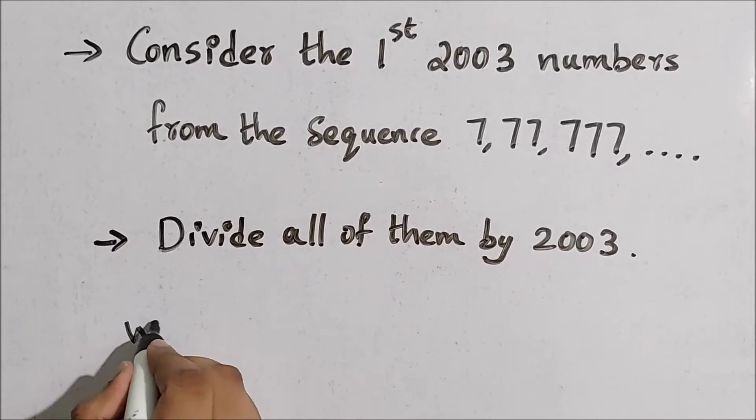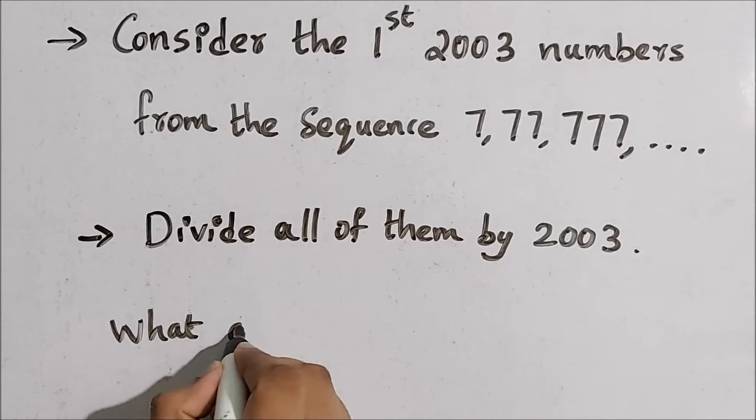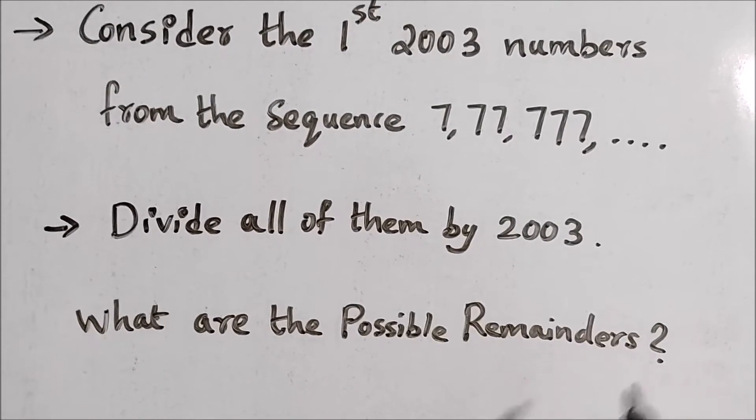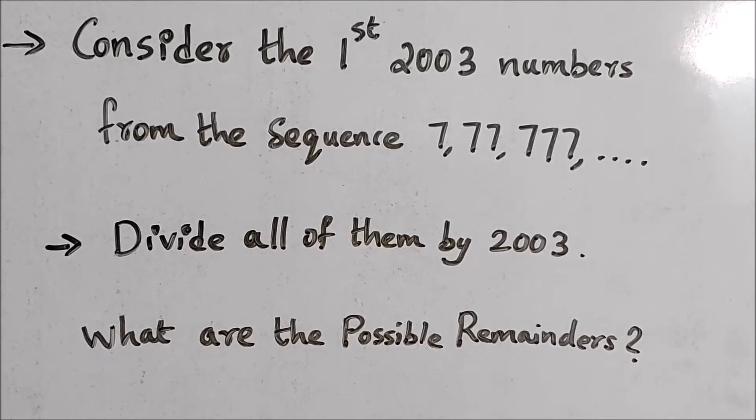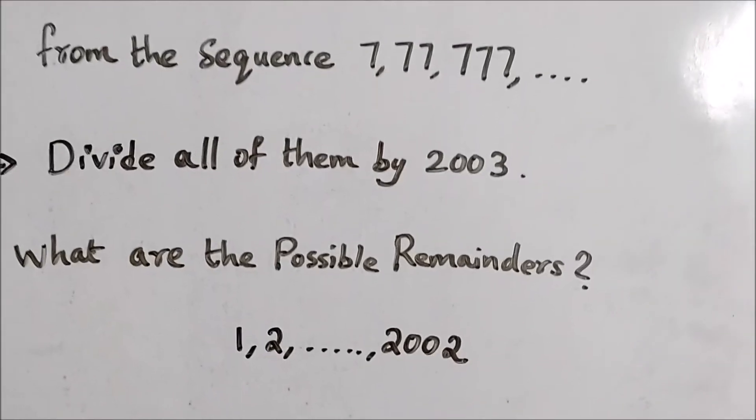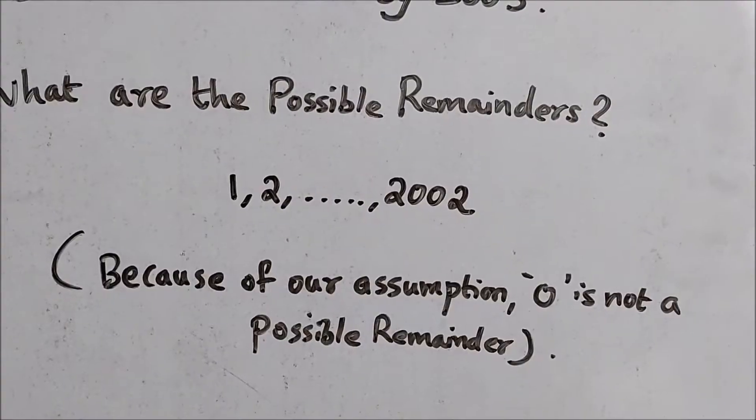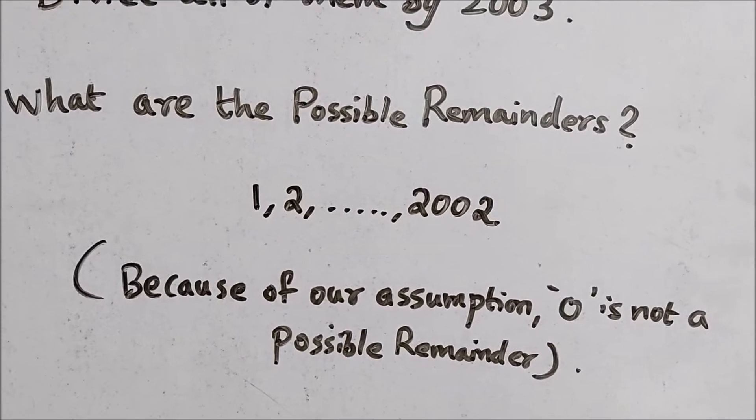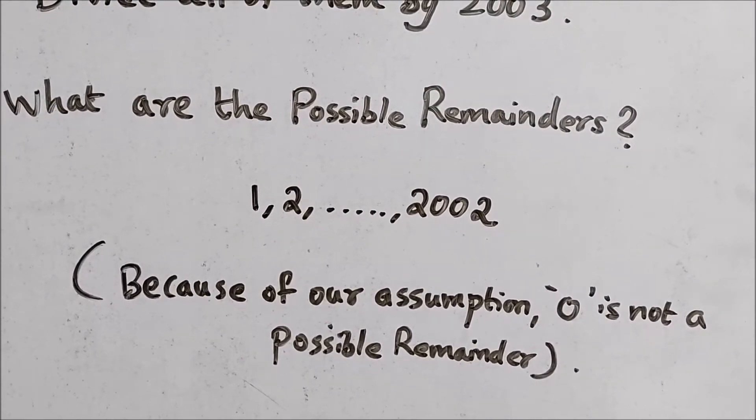We divide all of these numbers by 2003. So if we do so, what are the possible remainders? Yes, the possible remainders are the numbers from 1 to 2002. Zero is not a possible remainder because of our assumption. We assume that no element in this sequence is divisible by 2003.